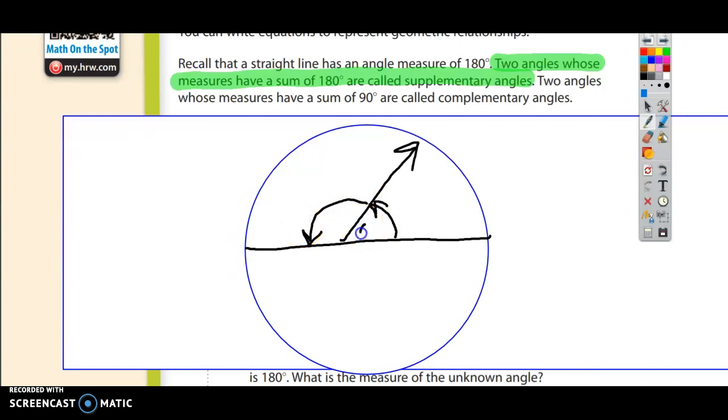So let's pretend this angle was 60 degrees. What would this one be? Well, what we would do is we'd write an equation: 60 plus x equals 180, because whatever this is has to combine with 60 to make 180. So that's the definition of supplementary.